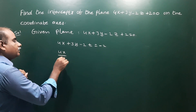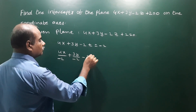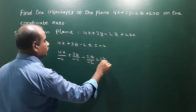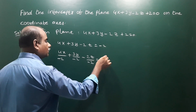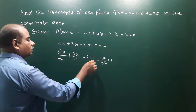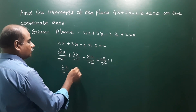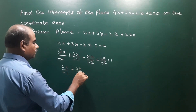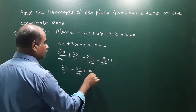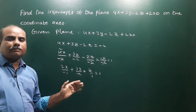Dividing through by minus 2: 4x over minus 2, plus 3y over minus 2, minus 2z over minus 2, equals minus 2 over minus 2. This simplifies to: 2x over minus 1, plus 3y over minus 2, and with minus times minus giving plus, z over 1 equals 1.